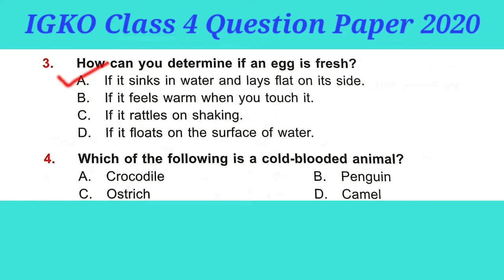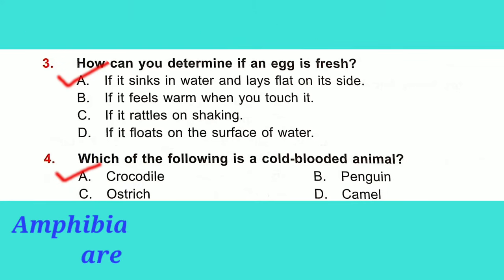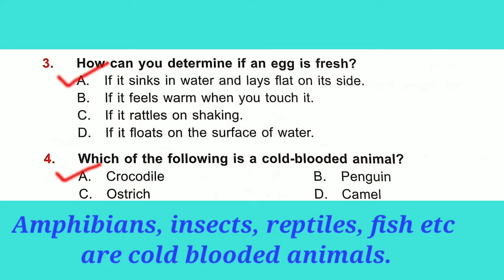Question No. 4: Which of the following is a cold-blooded animal? Option A is correct: Crocodile. Amphibians, insects, reptiles, and fish are all cold-blooded animals. So Option A is correct — crocodile is a cold-blooded animal.